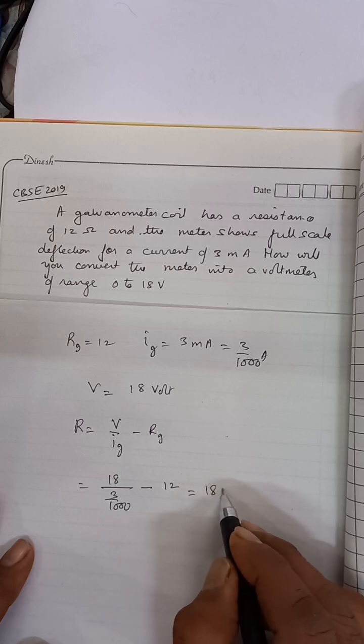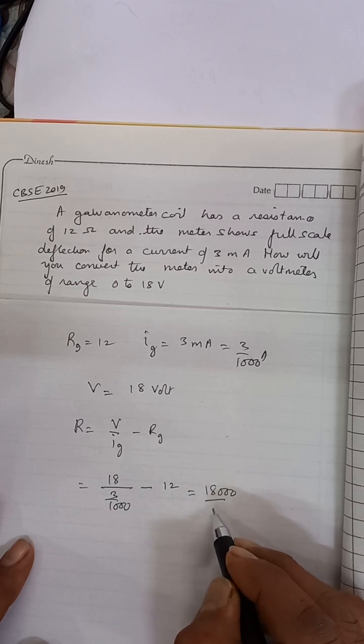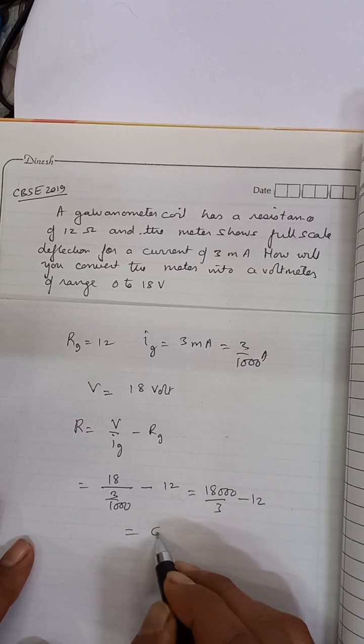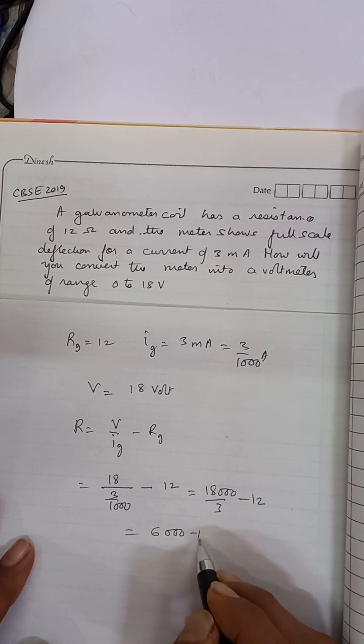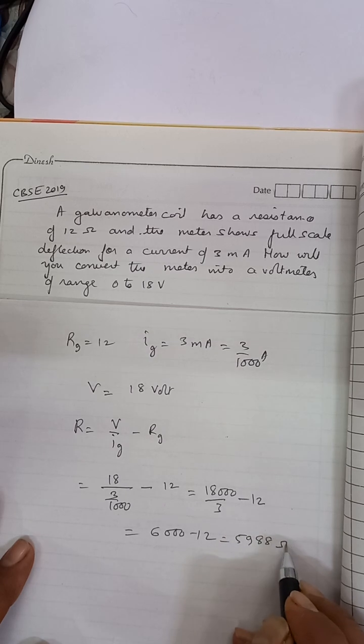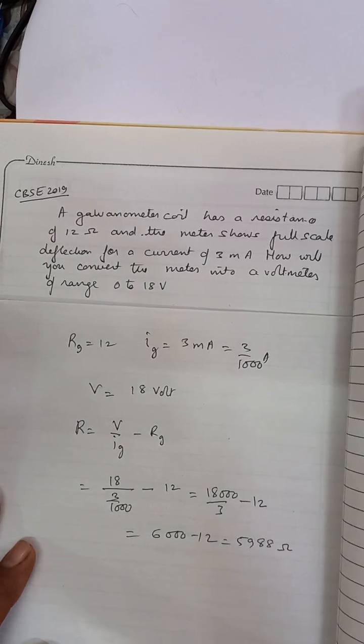This will be 18,000 divided by 3 minus 12. So this will be 6000 minus 12 which will be 5988 ohms. All right, thank you.